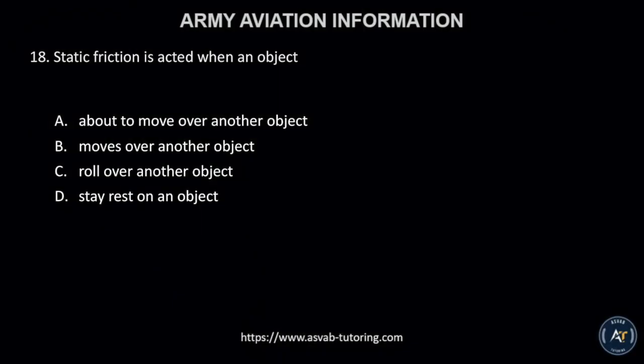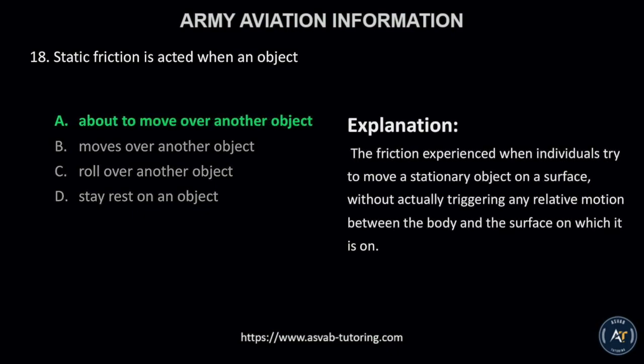Number 18. Static friction is acted when an object A, is about to move over another object; B, moves over another object; C, rolls over another object; or D, stays at rest on an object? The correct answer is letter A, about to move over another object. Static friction is the friction experienced when individuals try to move a stationary object on a surface, without actually triggering any relative motion between the body and the surface on which it is on.